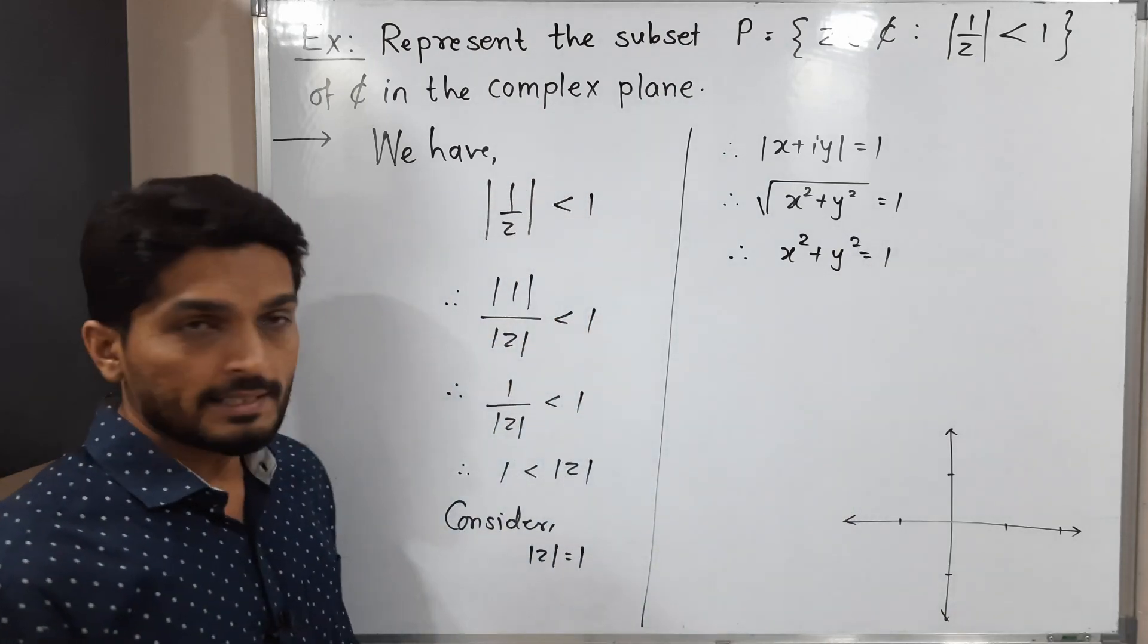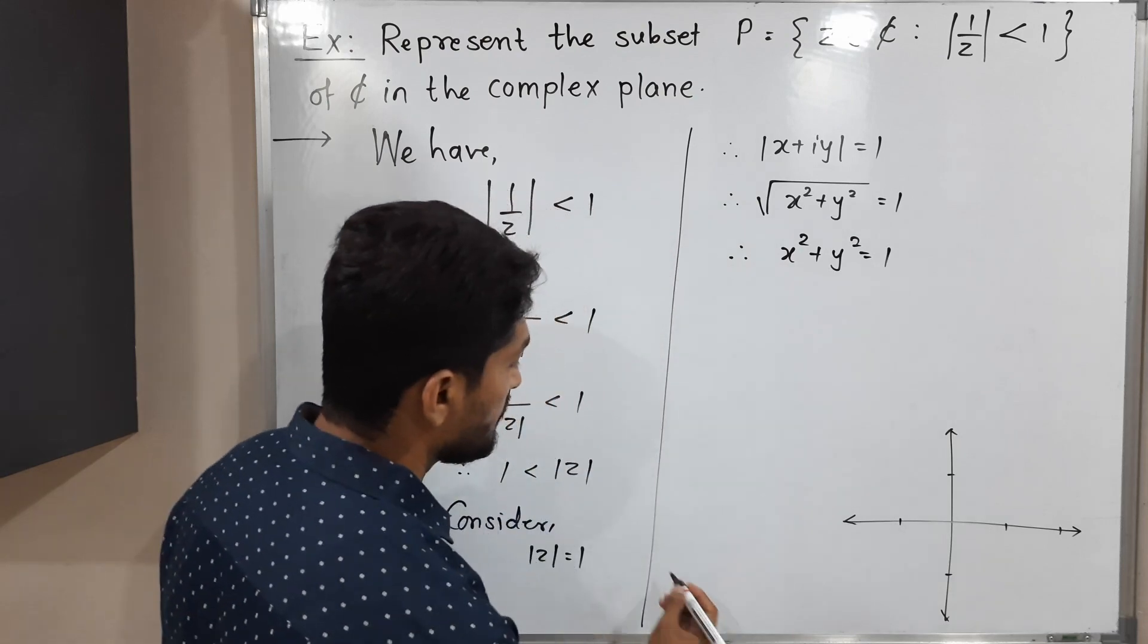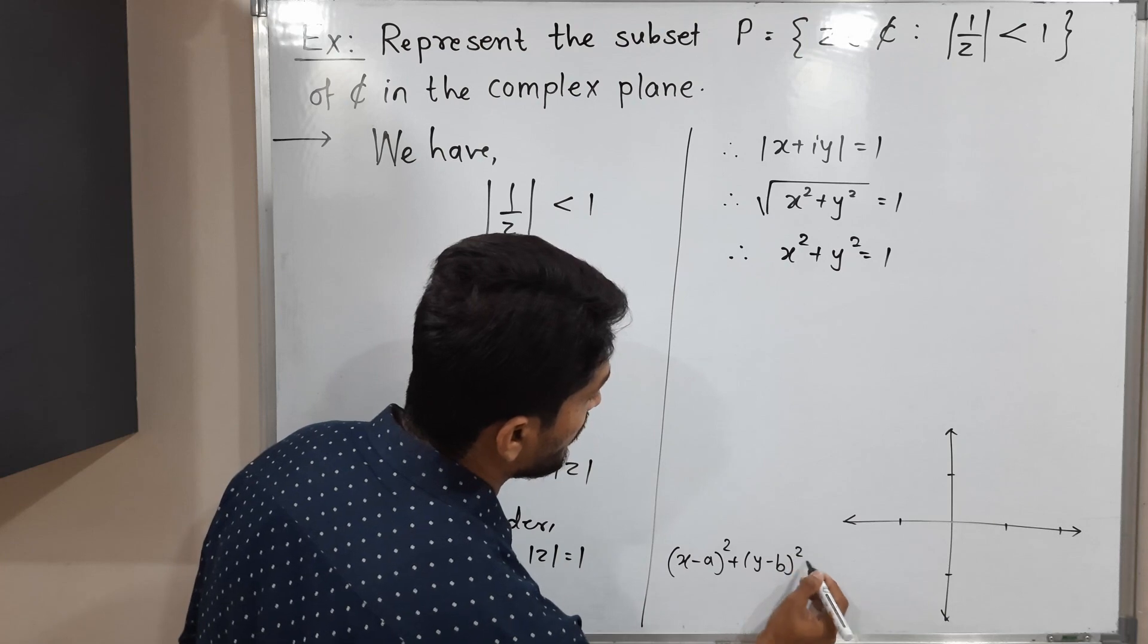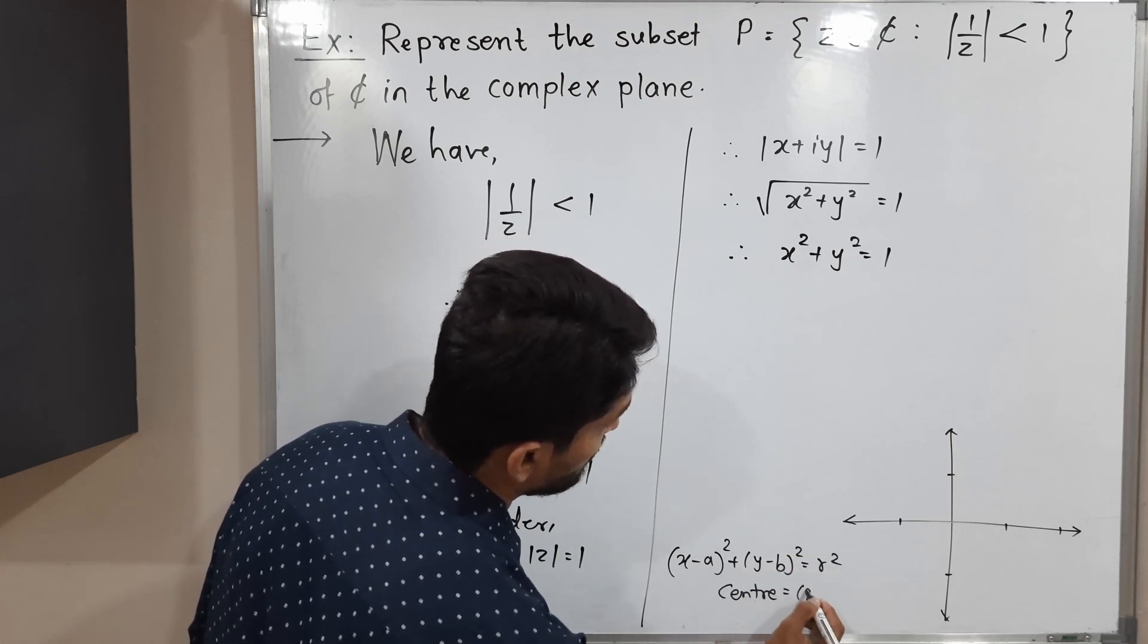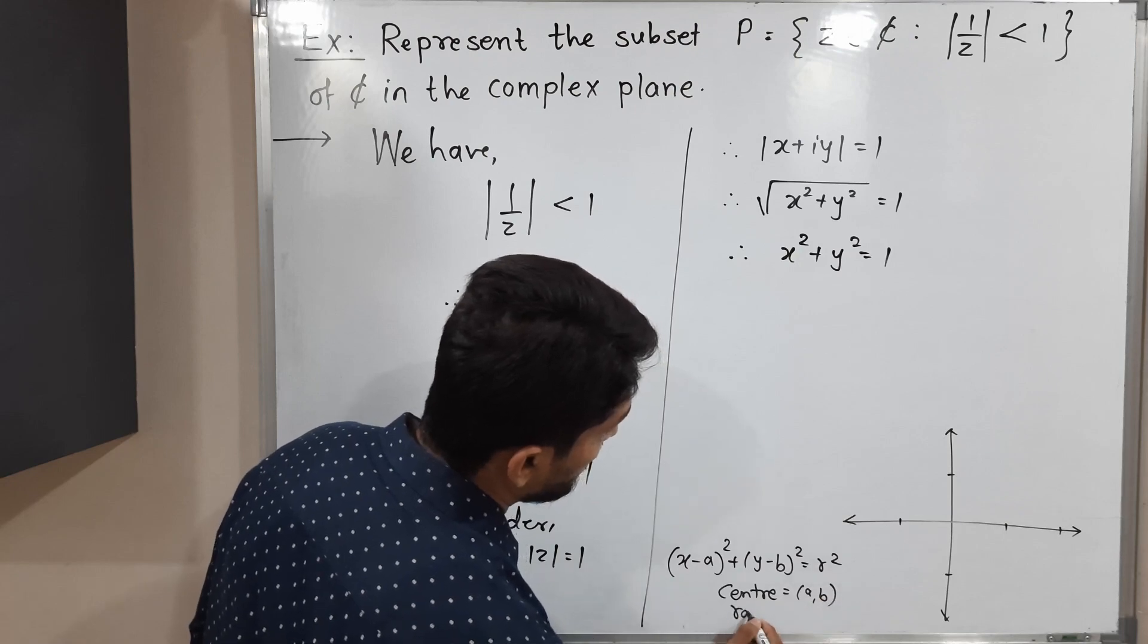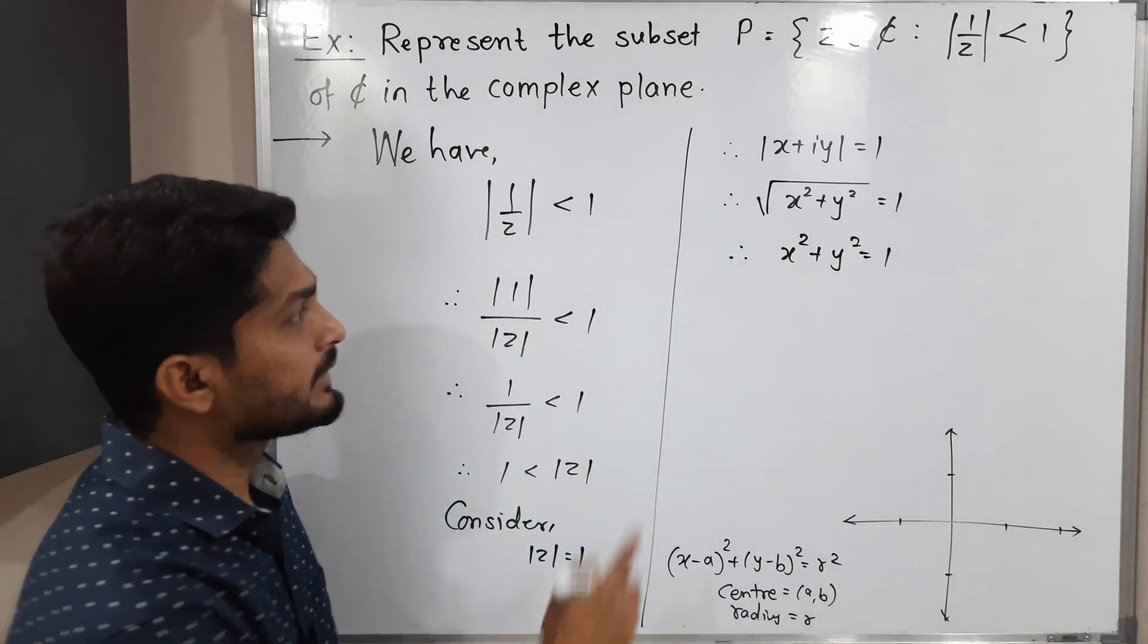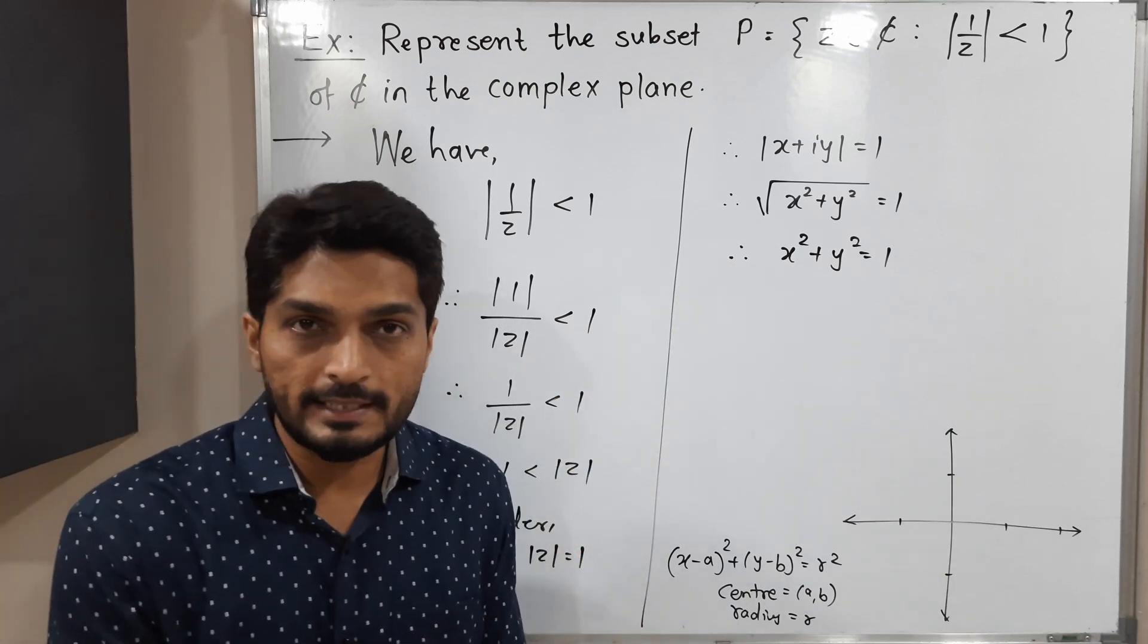This is the equation of a circle. The standard equation of a circle is (x - a)² + (y - b)² = r², having center (a,b) and radius r. Here we have x minus nothing, so obviously 0.